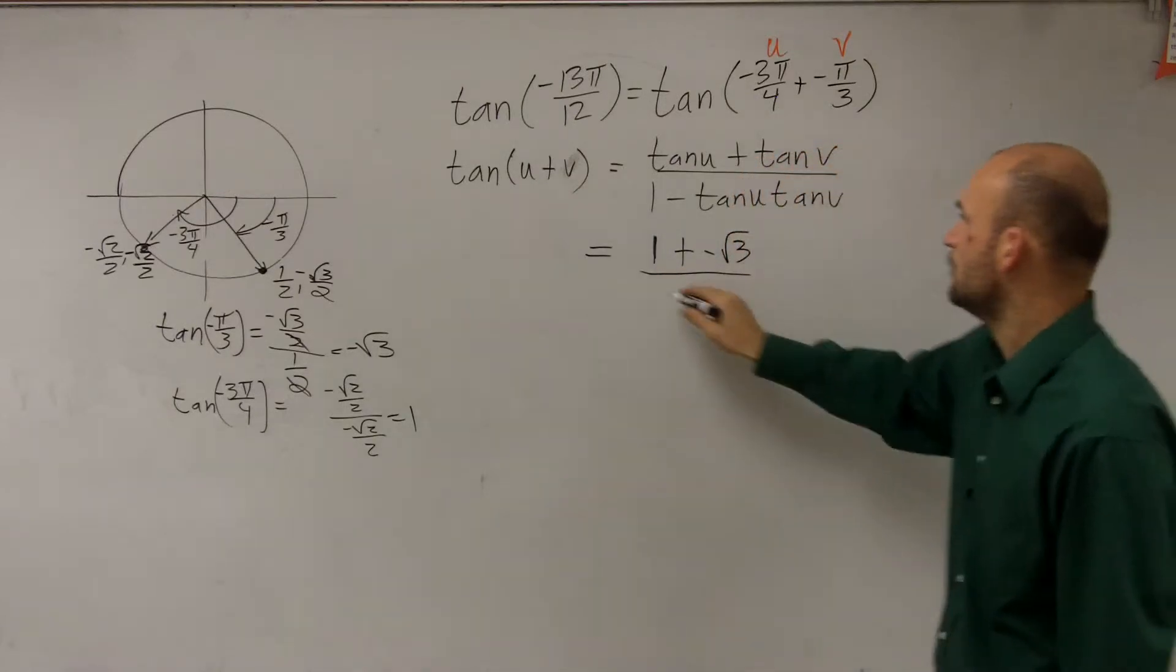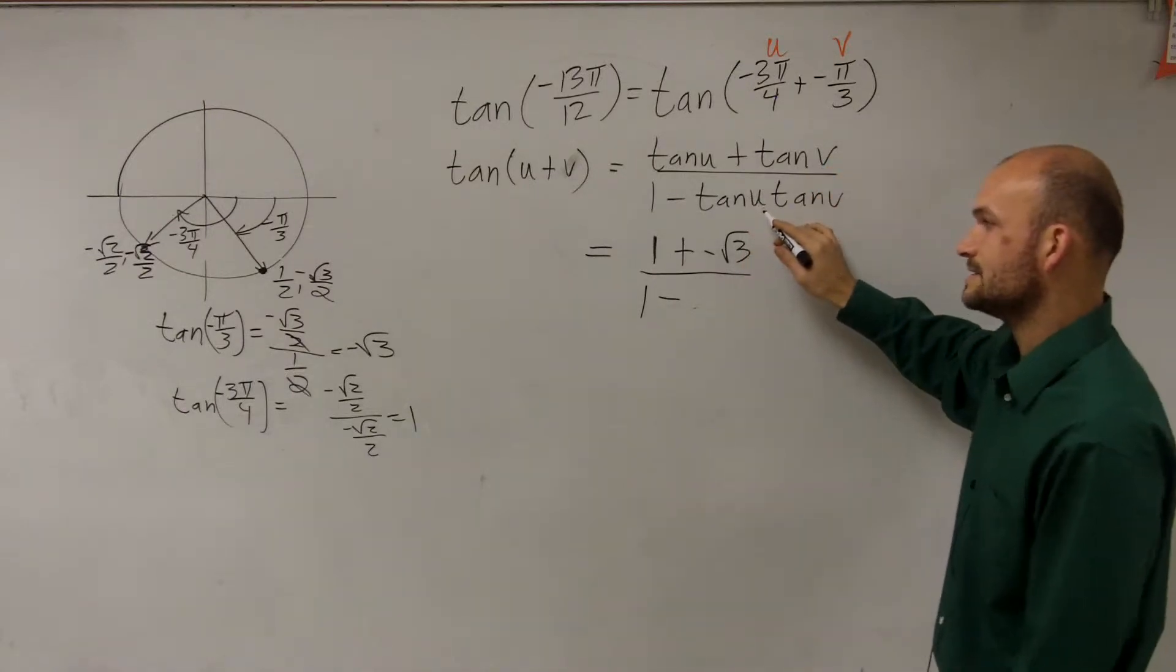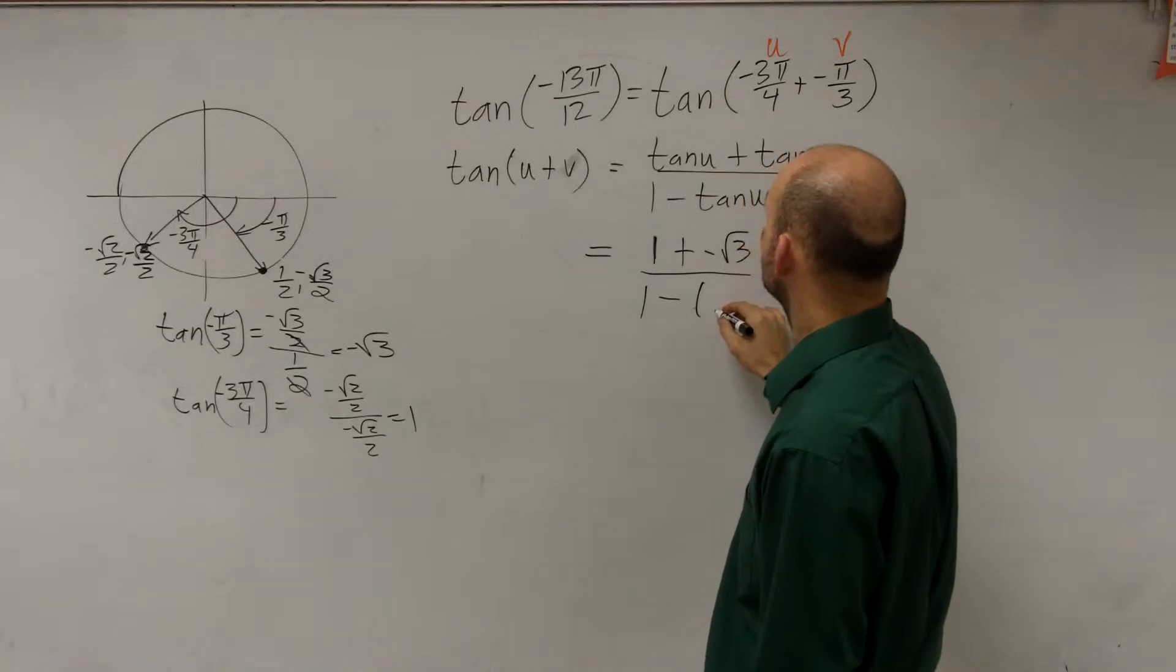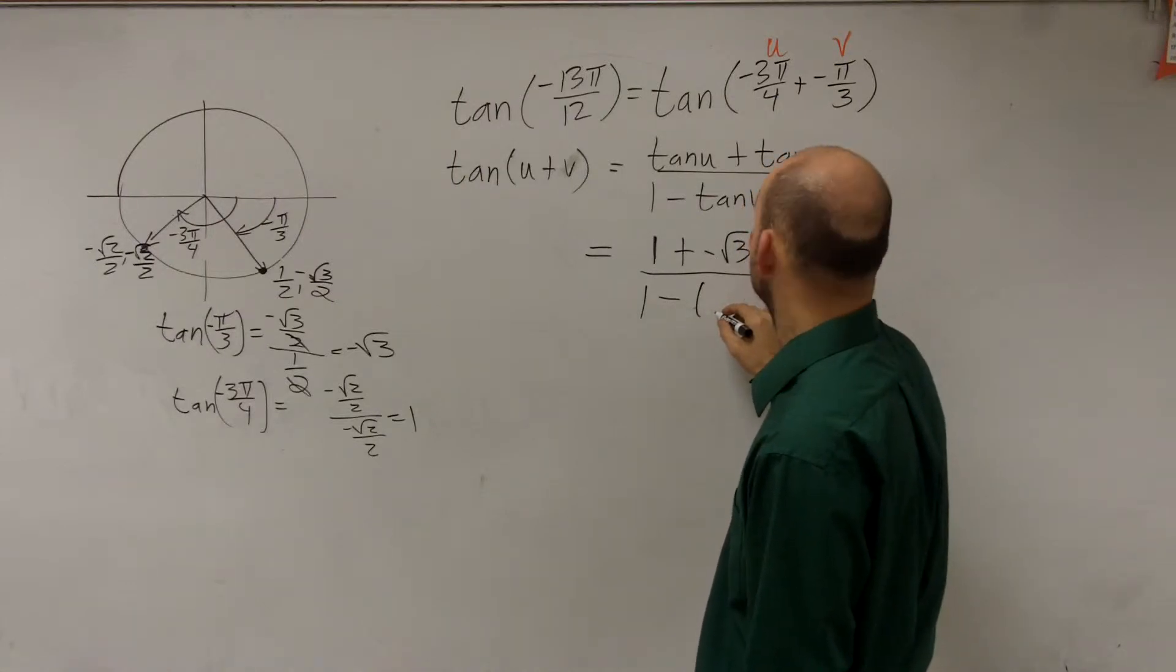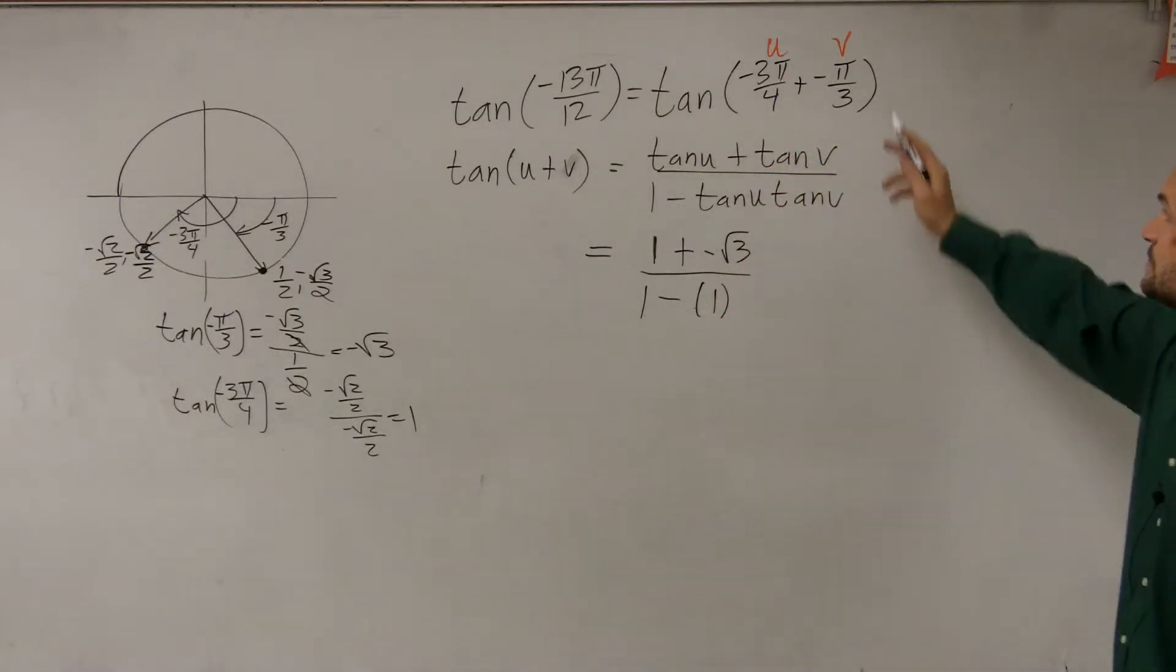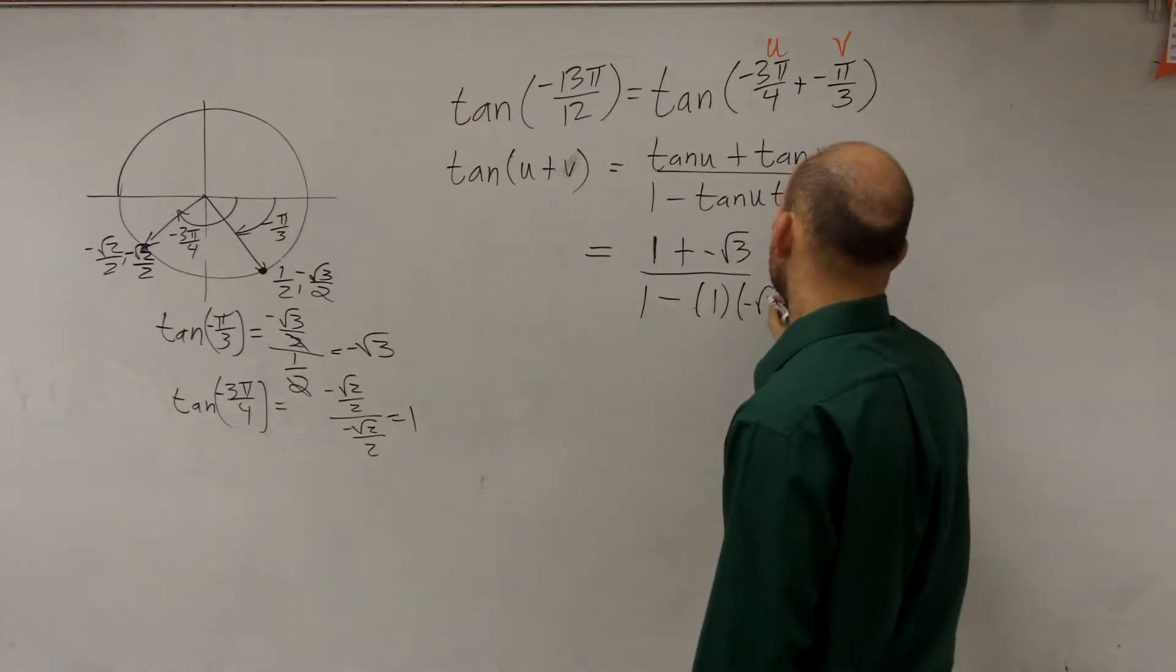divided by 1 minus the tangent of u times the tangent of v, which is 1 times negative square root of 3.